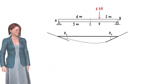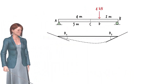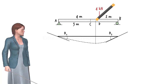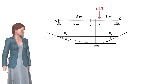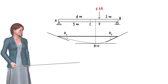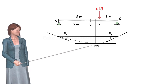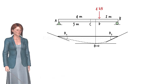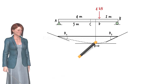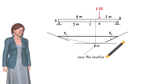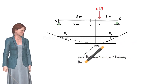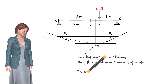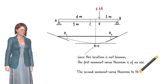For example, consider the same simply supported beam but with an off-center load. Here, the maximum deflection occurs somewhere between points C and D. Since we don't know the exact location at which the slope of the elastic curve vanishes, the first moment area method cannot be used to determine the end slopes. For that, we need to utilize the second moment area theorem.